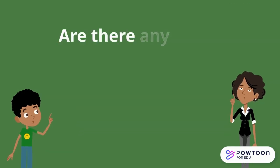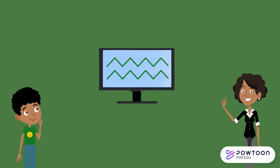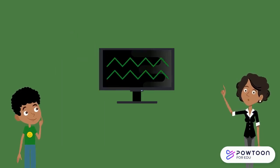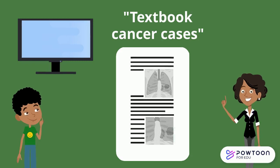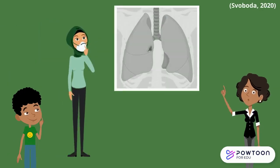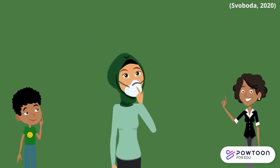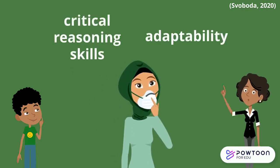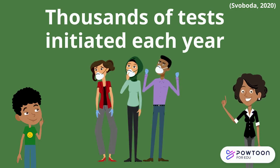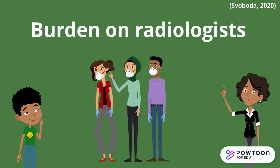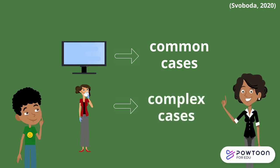That's amazing. Are there any cases where a radiologist's expertise might be more helpful though? Absolutely. Since AI systems look for patterns based on the data sets that they are trained against, these systems are best at flagging the common, or what we call textbook cancer cases. One commentary highlights that human radiologists can more accurately diagnose the more complex or unusual cancer cases, likely due to critical reasoning skills and adaptability that can't quite be mimicked by AI just yet. Since thousands of cancer screening tests are initiated each year, it places a lot of burden on radiologists. AI could be used to flag the common cases, allowing radiologists more time and resources to focus on the more complex cases.